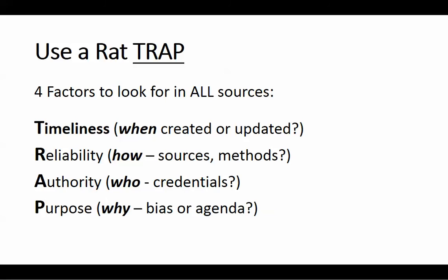The fourth factor to look at is purpose, and this is really a culmination of the three previous factors — that is, why is this information being presented the way it is, how it is, and where it is. As we all know, there's lots of information out there that has a particular agenda or perspective, has a bias behind it, and there's even intentional misinformation. This isn't always easily apparent, so you need to weigh the other factors, read through the source, and look for clues — like who's the authority, who's sponsoring this information, who's the organization behind it. That can often give you useful insights.